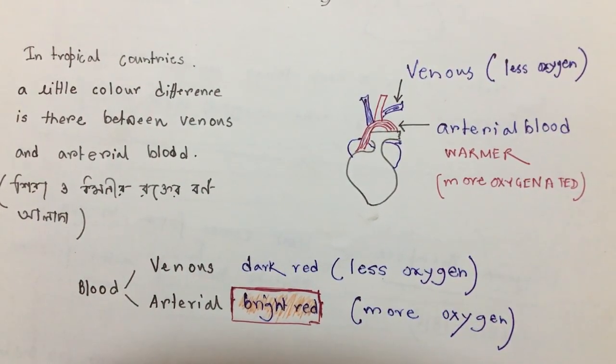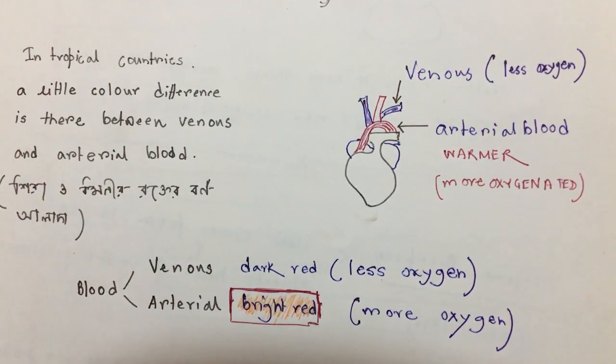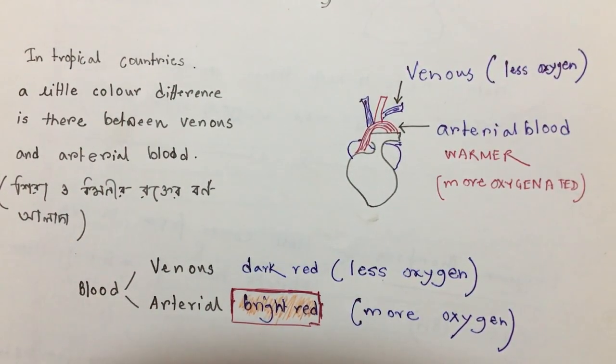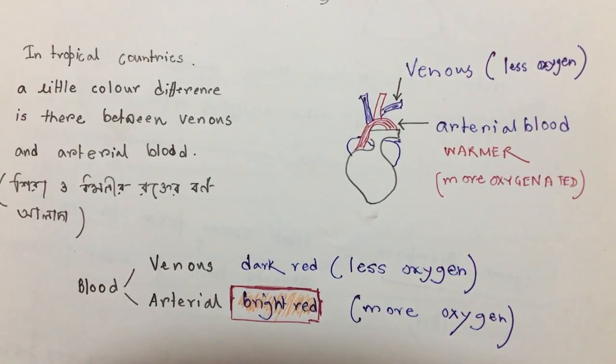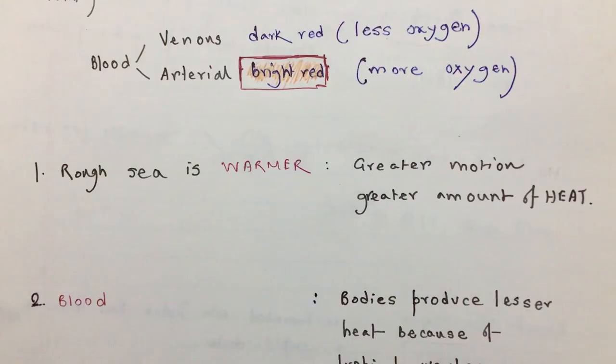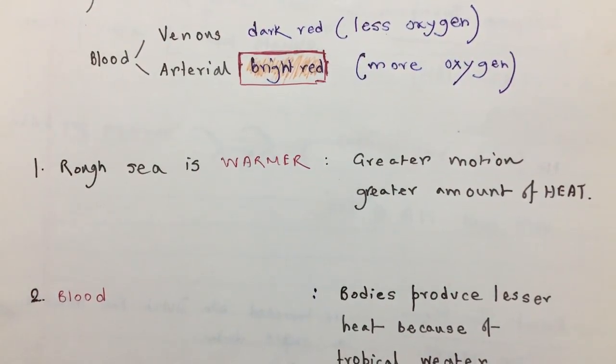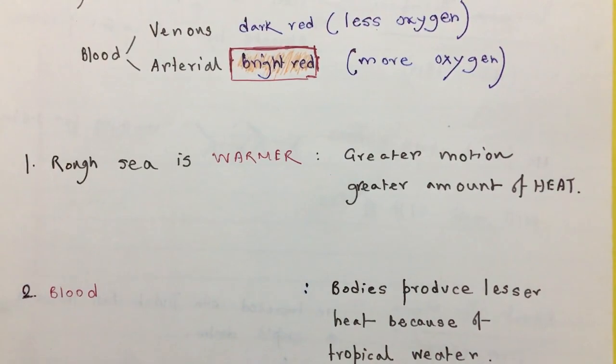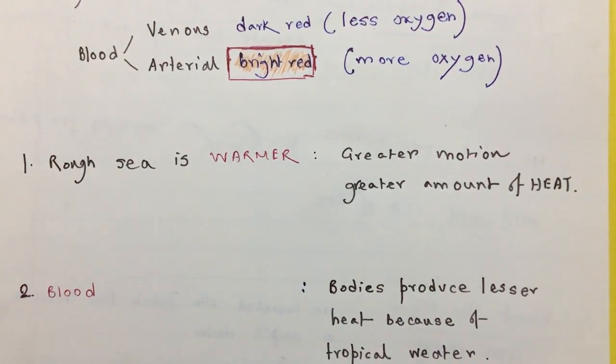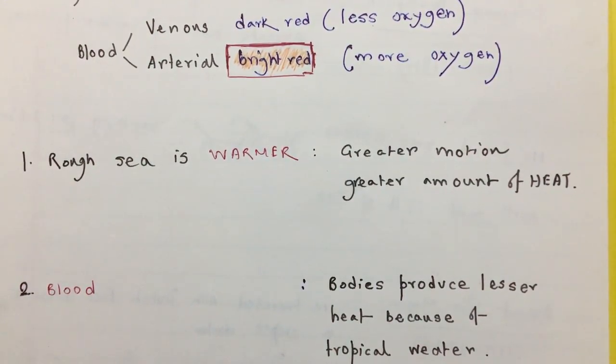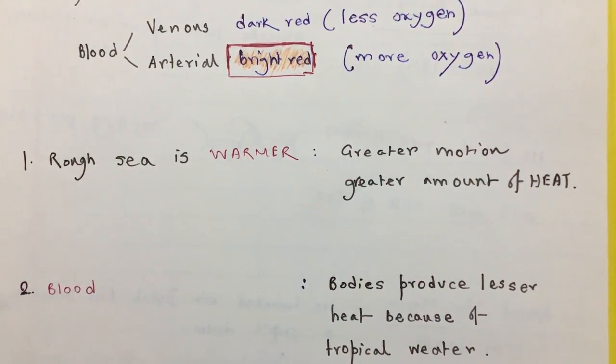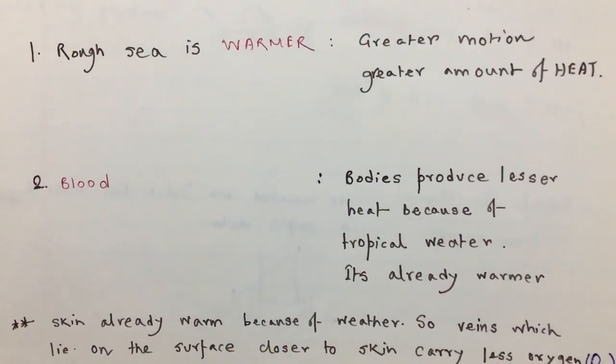Venous blood, that is dark red, contains lesser oxygen, whereas arterial blood, that is bright red, contains more oxygen. In tropical regions, because it's already warm outside, our body is producing lesser heat to maintain body temperature.